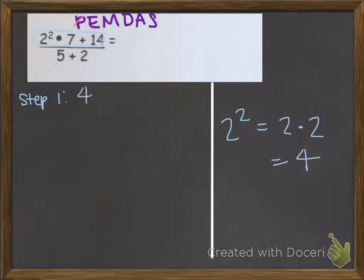So I'm going to have 4 times 7 plus 14, and I'm still going to write everything. Even though I'm only focusing on the top right now, I'm going to write everything. So I need to look at what I wrote in my step 1 line and say, okay, so did I get rid of all the exponents? Yes, I did. I solved all the exponents. I don't have to worry about those anymore.